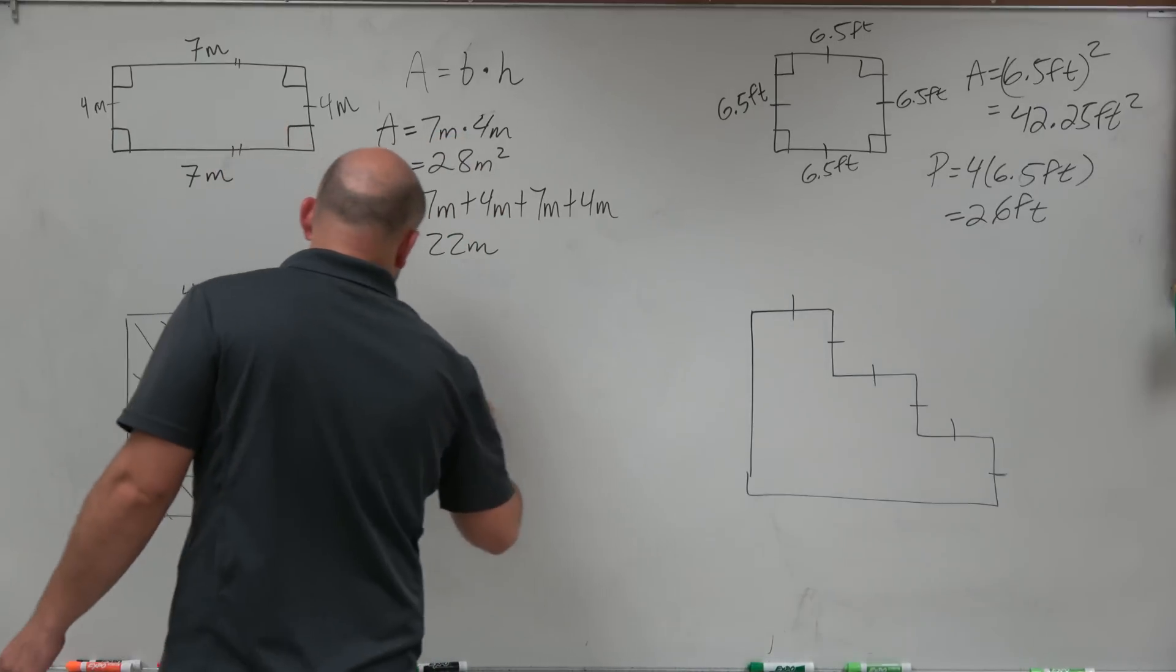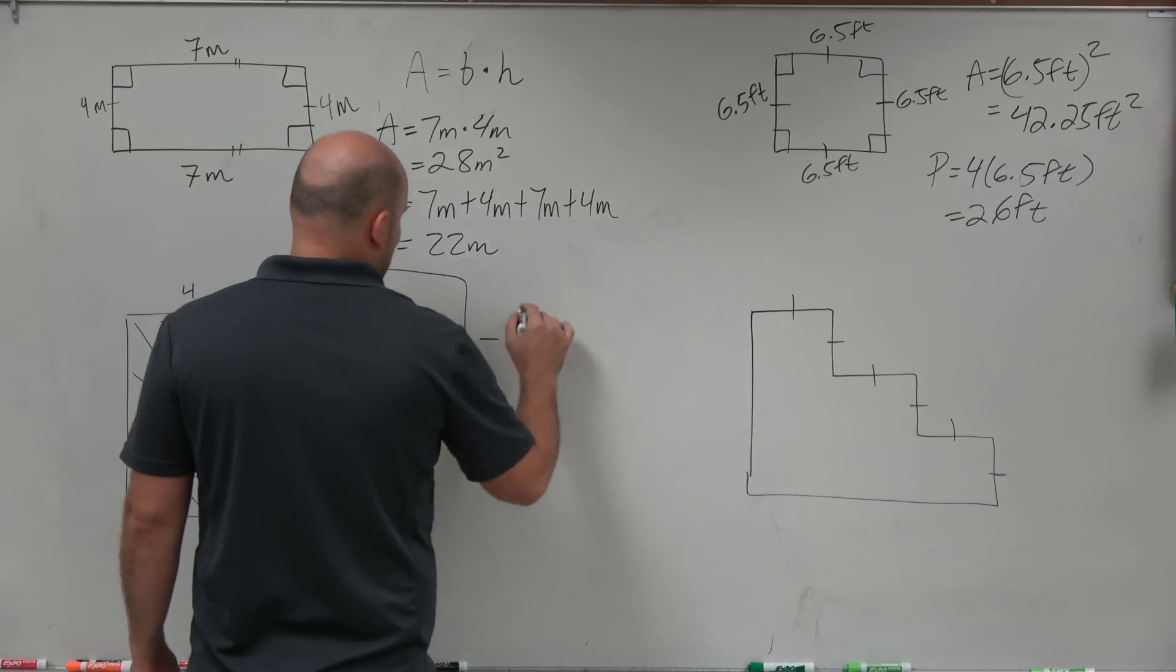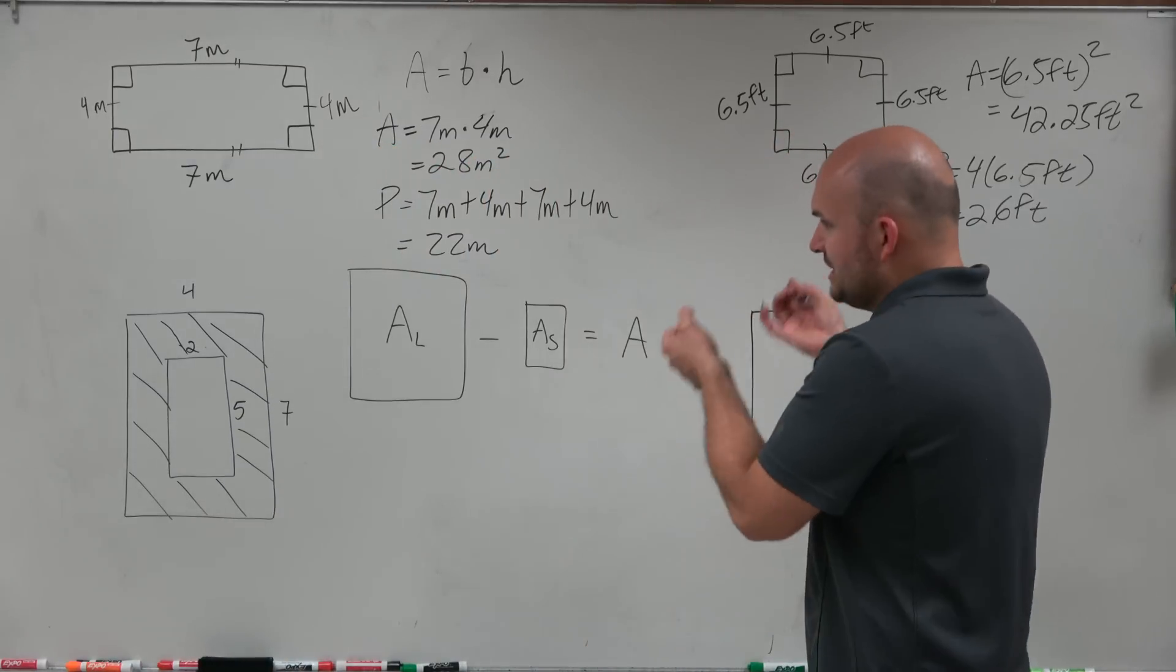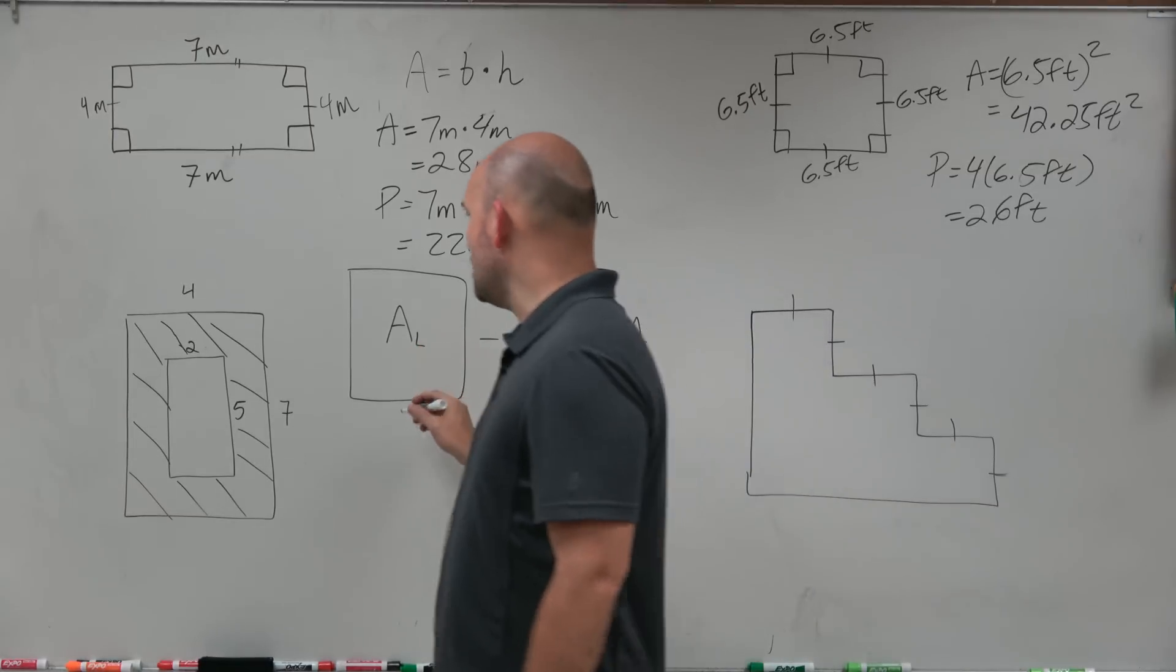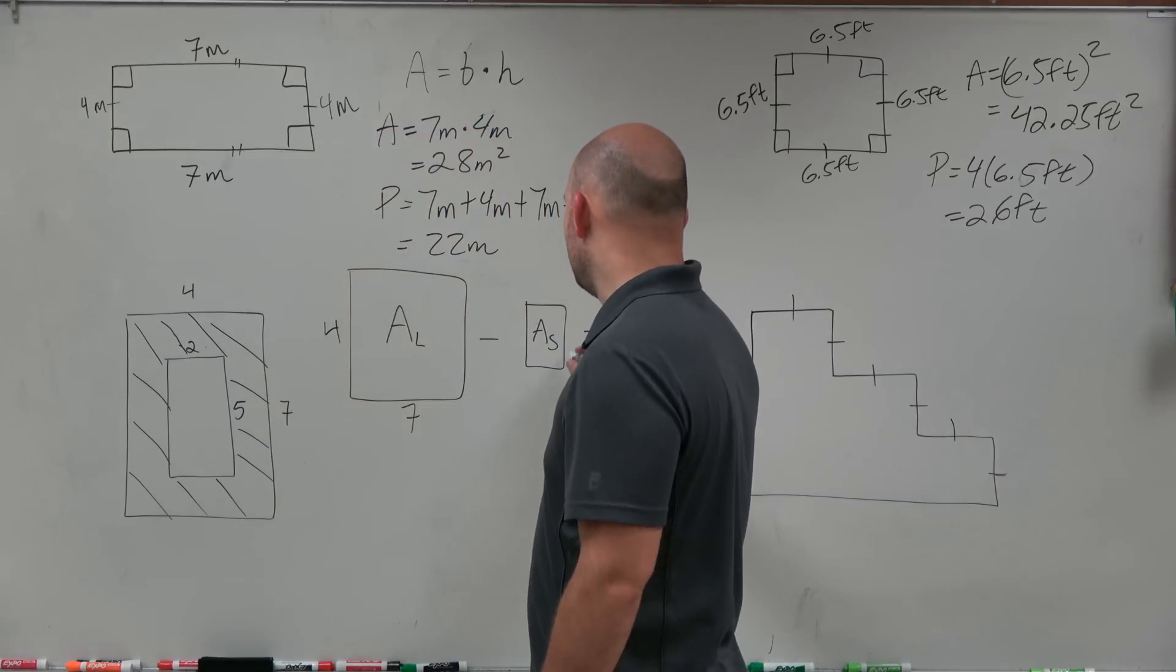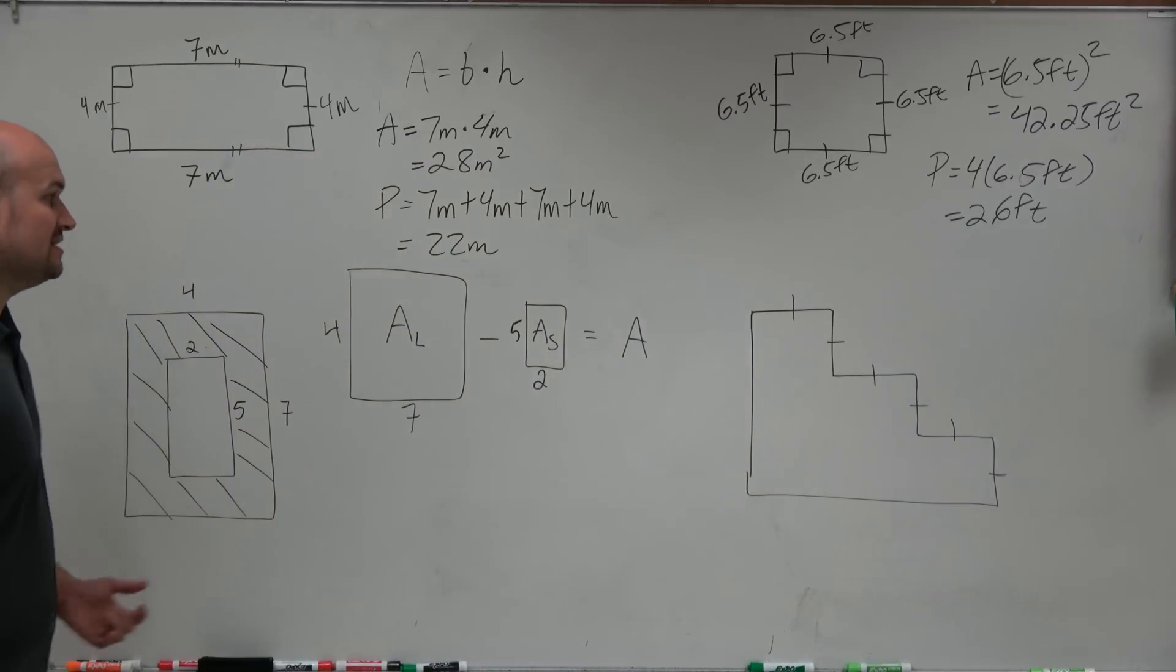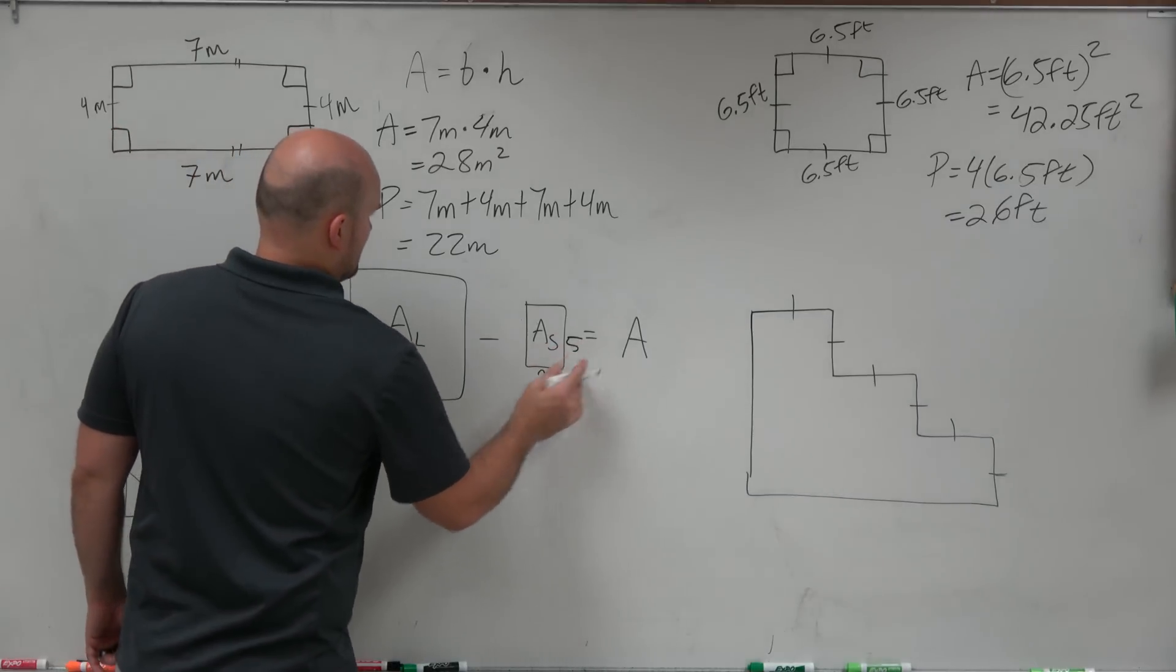Really the question that we're asking is the area of the larger minus the area of the smaller equals our area. That's basically the area of the picture frame. I'm going to use subscripts to represent the large area and the small area. So the large area is 7 by 4, whereas the small area is going to be 5 by 2.